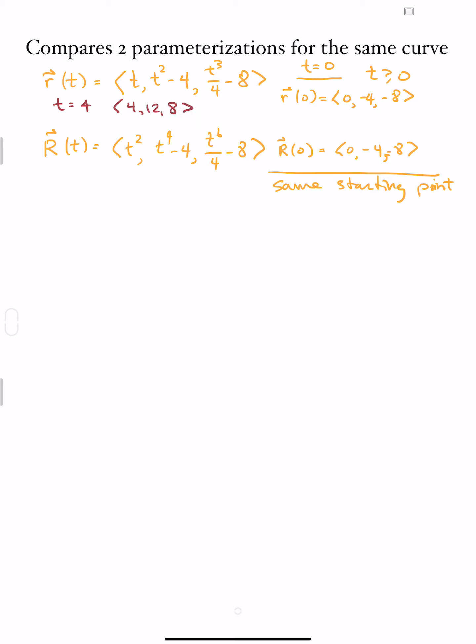However, for the capital vector, when t = 2, I'm at that point. So these two vectors may go through the same points, but one is happening at a different rate than the other.